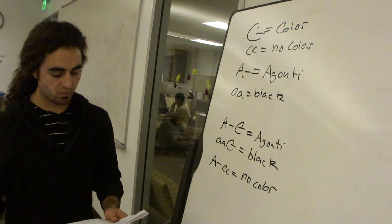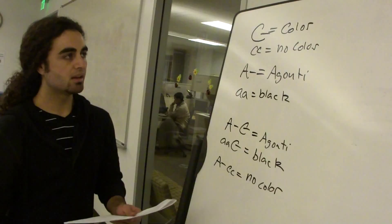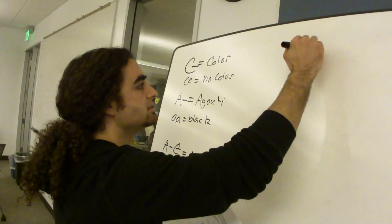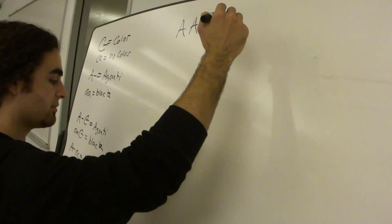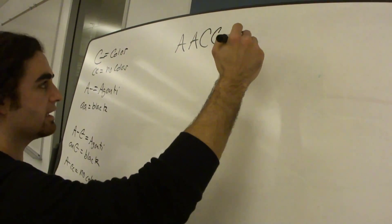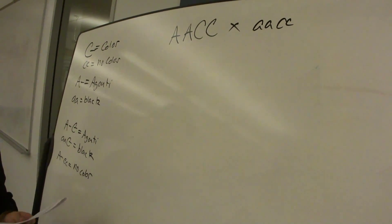Okay, so what F1 and F2 genotype and phenotype ratios are obtained from our cross between big A, big A, big C, big C, and little a, little a, little c, little c. Okay, so F1 and F2.